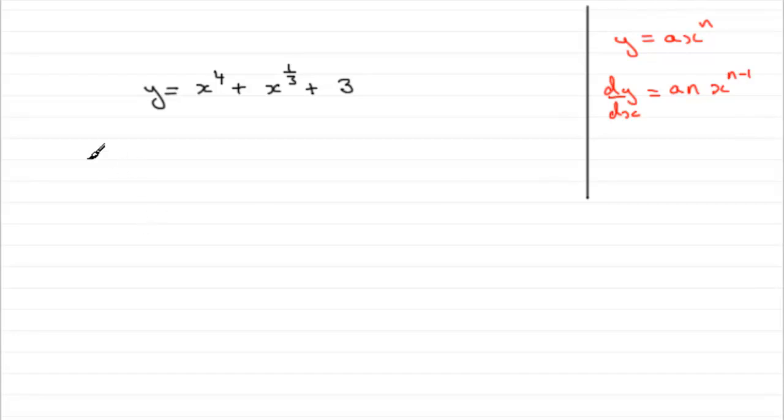So I would put therefore dy by dx equals, so for the first term we've got a 1x to the power 4, so it's going to be 4 times 1 is 4. Reduce the power by 1 and you've got x to the power 3.